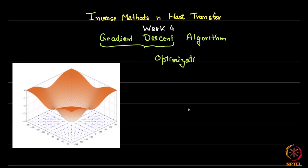It is a very simple optimization algorithm, far more simple than the normal equations method, which is a direct method. This is what is known as an iterative method — you make some guesses for the parameters you are optimizing for and keep on improving them. This is a standard process within any inverse problem, within machine learning and without machine learning also.